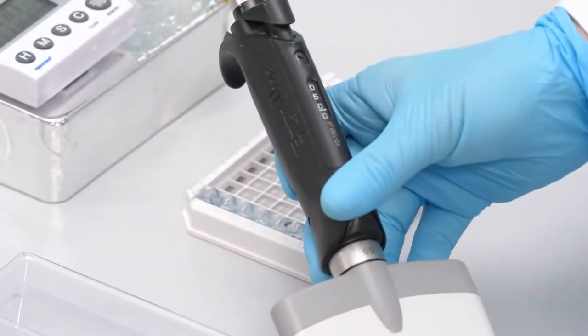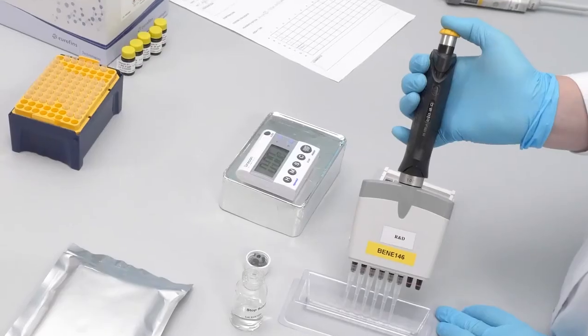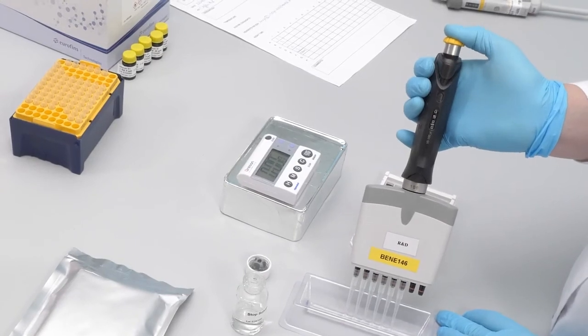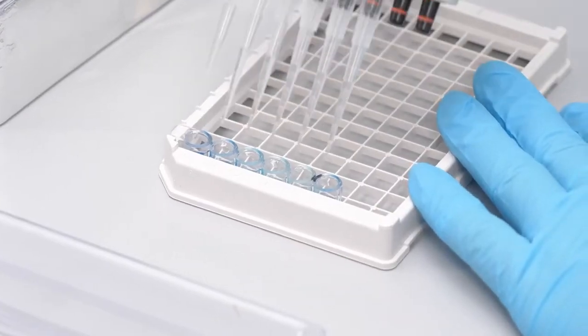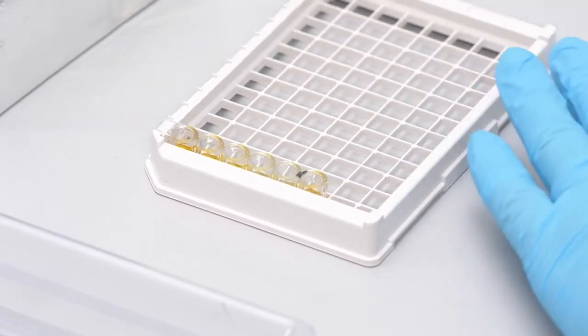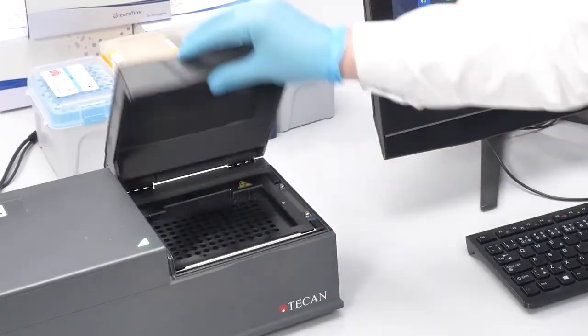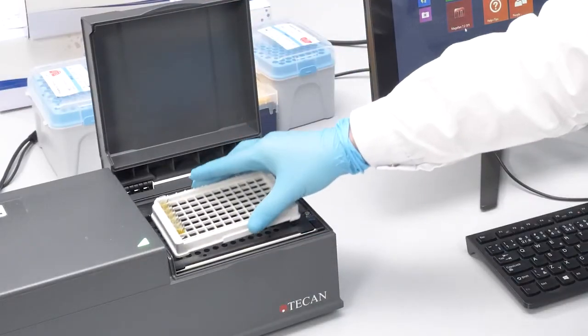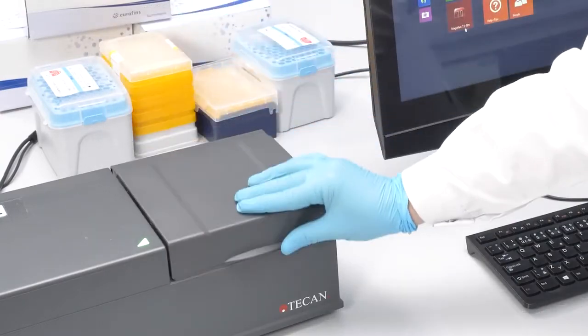Add 50 microliters of stop solution in each well. Gently shake the plate for a few seconds. Measure the absorbances at 450 nanometers within 15 minutes.